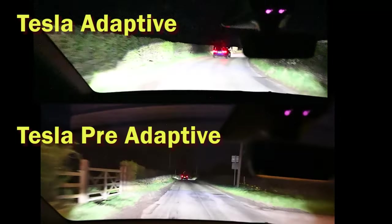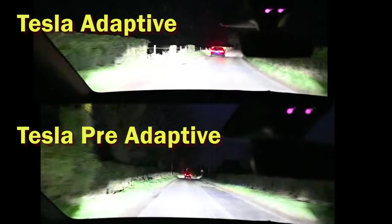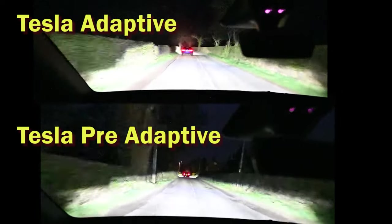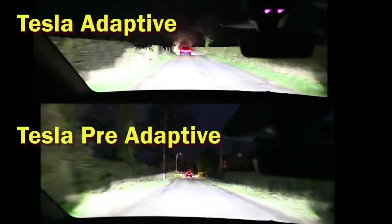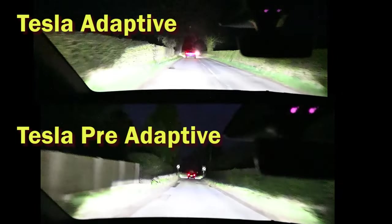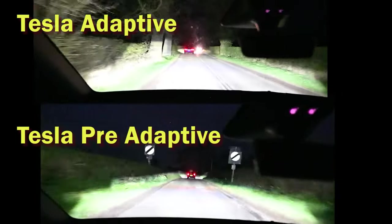So it seems to do its job quite well and it seems to be fairly reliable in terms of tracking the vehicle in front and dipping for oncoming vehicles. And certainly we didn't experience anybody flashing us or trying to tell us our full beam was on, which we think is an encouraging sign.